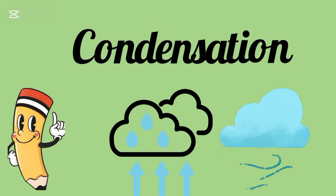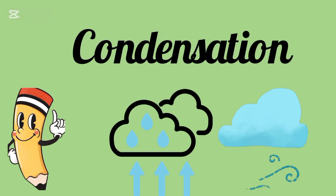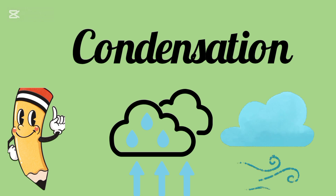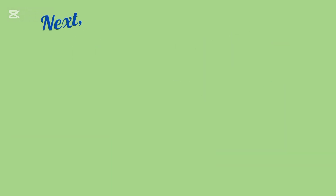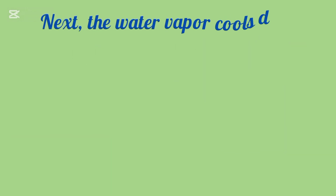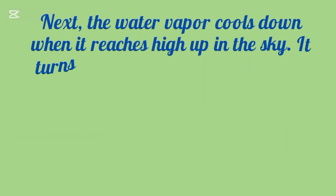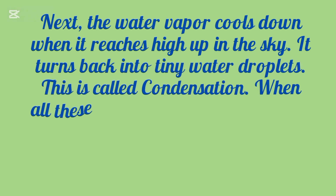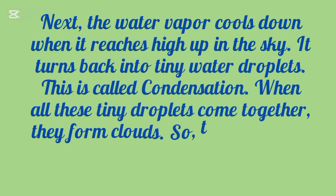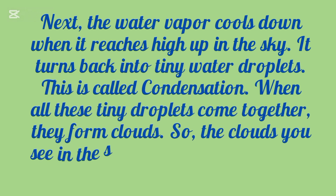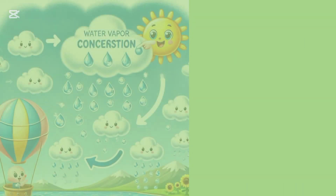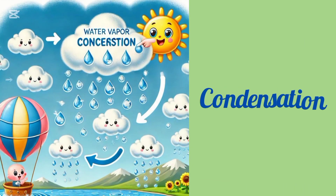Second is condensation. The water vapor cools down when it reaches high up in the sky and turns back into tiny water droplets. This is called condensation. When all these tiny droplets come together, they form clouds. So the clouds you see in the sky are made of millions of tiny water droplets!